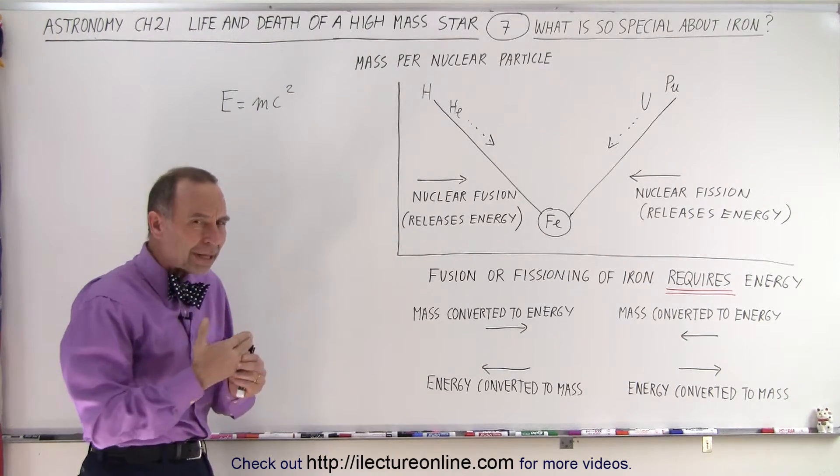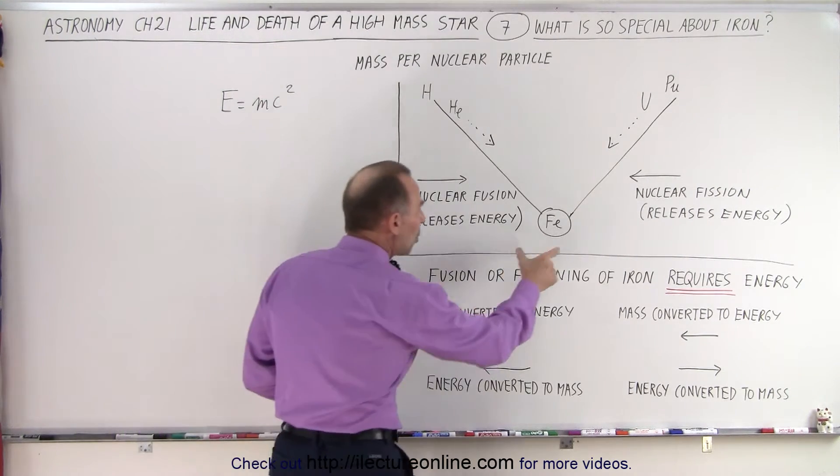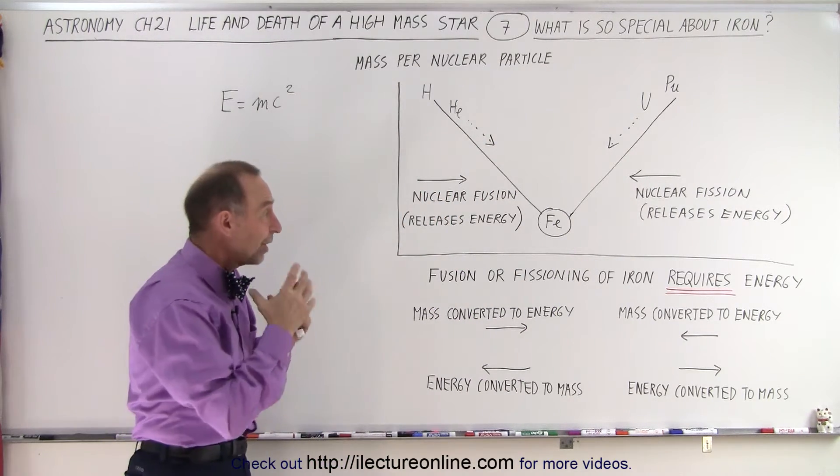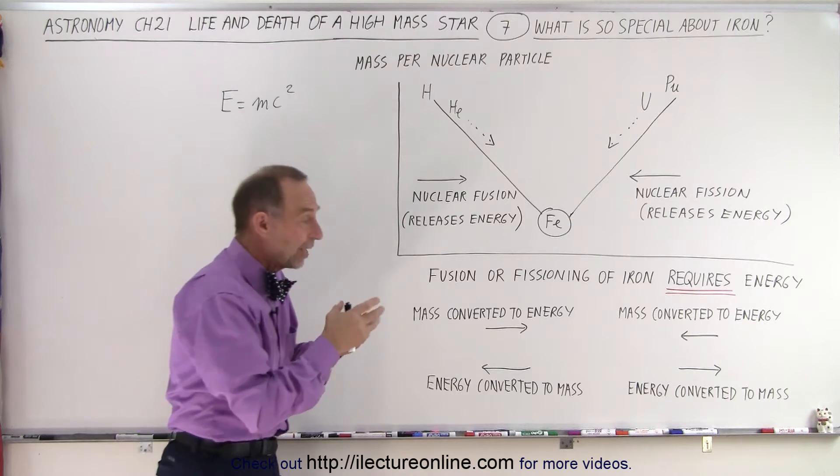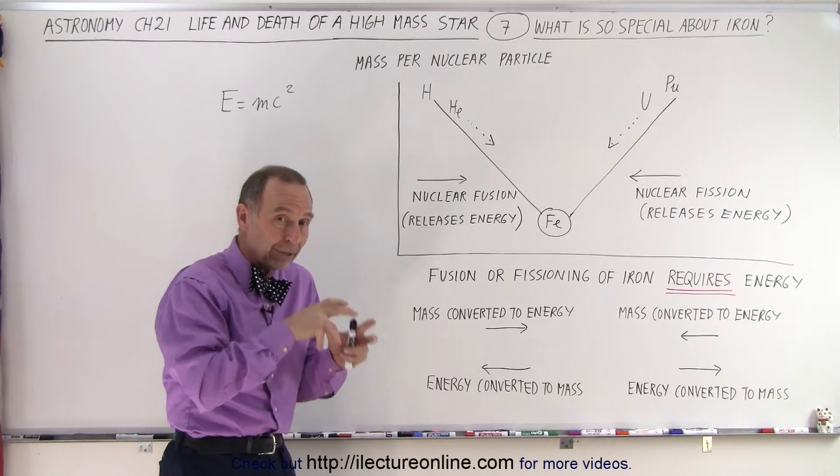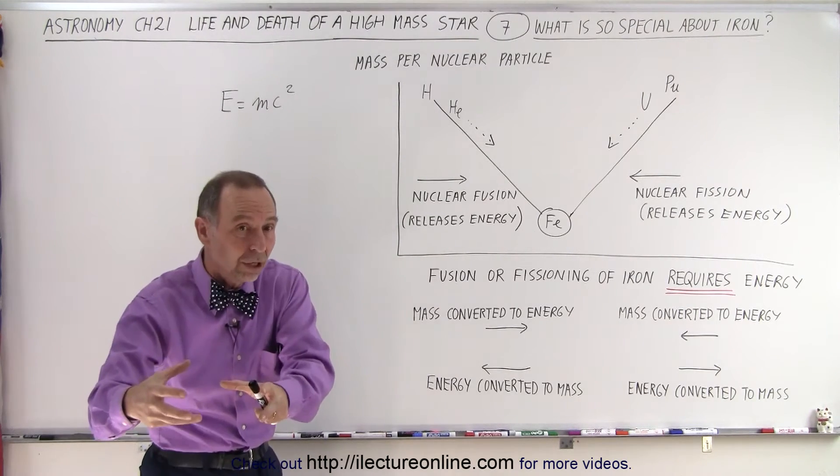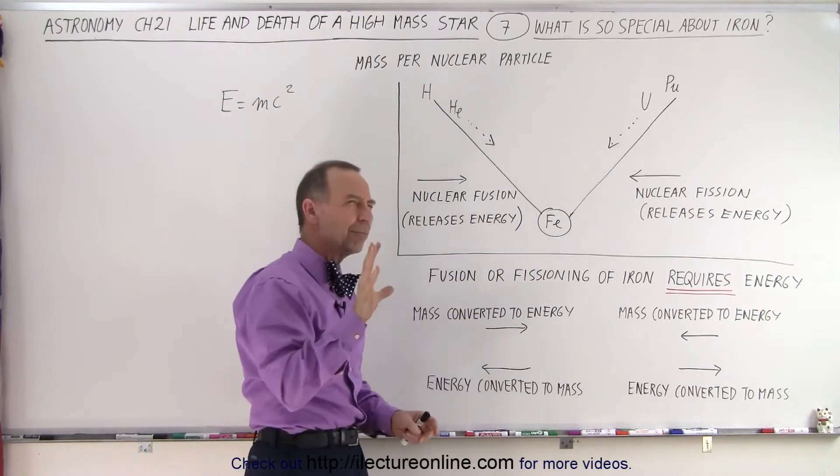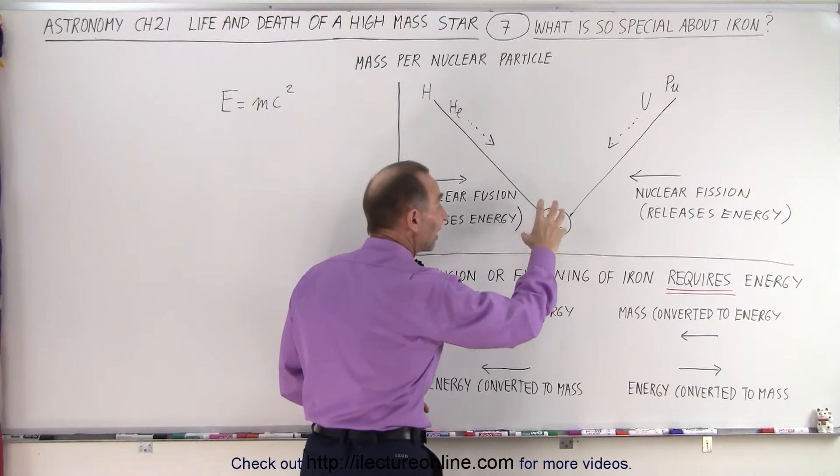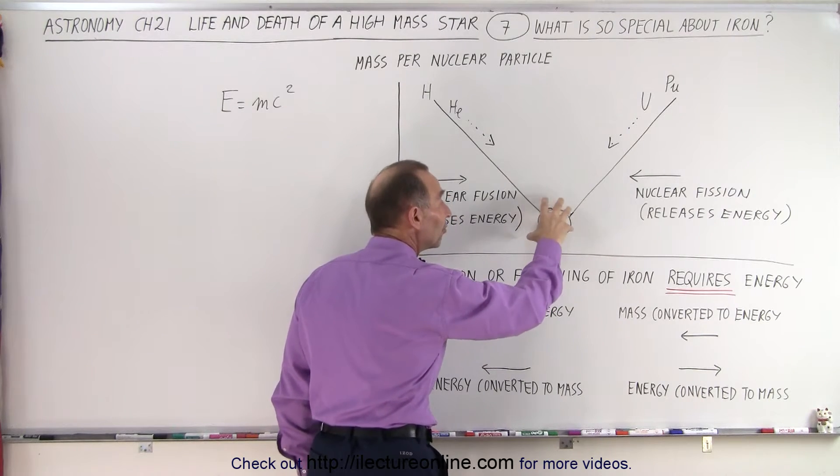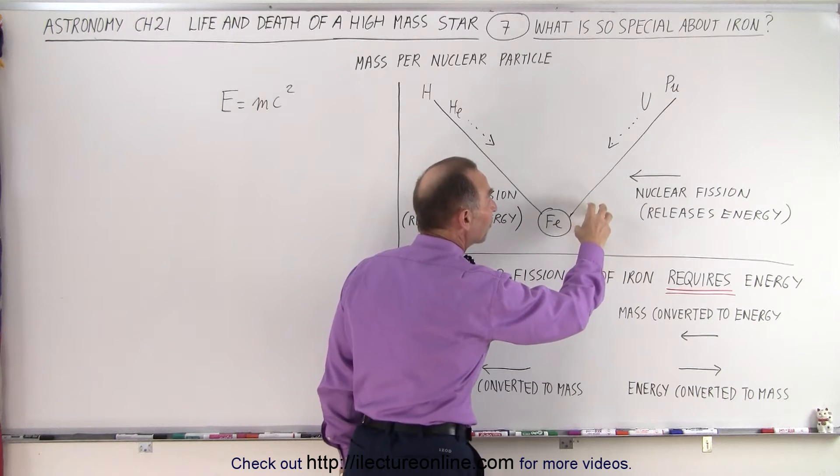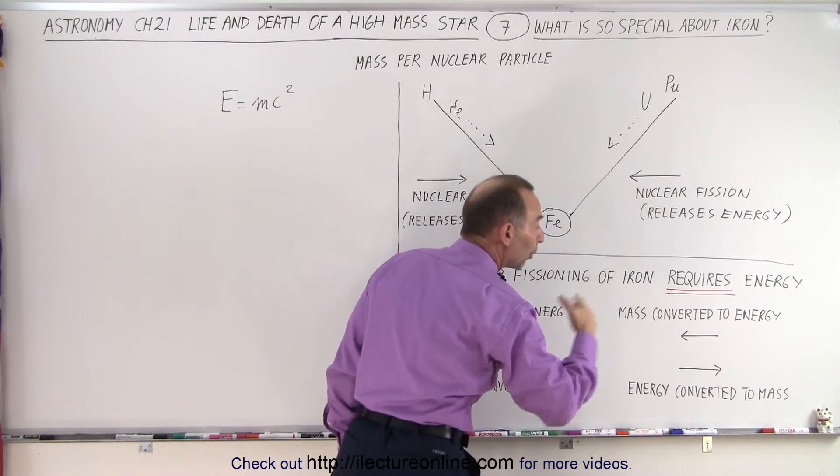So by the time you get to iron, iron has the most dense nucleus of all the elements of our periodic table. So when you try to fuse iron into the next element, instead of taking more mass and converting it to energy, now you need energy converted back to more mass. Notice, I think I might have misspoken here. What I meant to say is that iron has the least density of all the nuclei, so by trying to fuse it into the next element you have to make it more dense, which requires more energy.